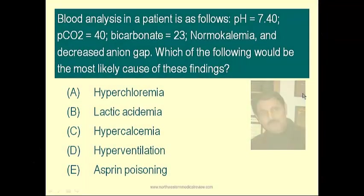Let me see who can answer this one for me. Blood analysis in the patient is as follows: pH 7.40, low or higher? Normal. pCO2 40, low or higher? Normal. Bicarbonate 23, low or higher? Close to normal. For the calculations, bicarbonate is 24, so close to normal. Let's consider it normal.